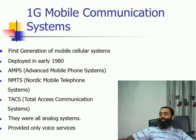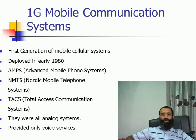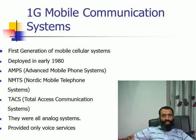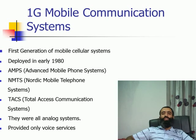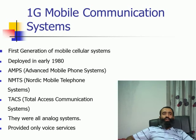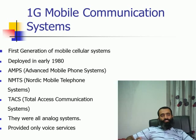The second system was NMT, the Nordic Mobile Telephony System, which was actually developed in the Scandinavian countries and primarily deployed there. Then you had the TACS system — Total Access Communication System — which was actually developed in the UK and deployed in Europe. So these 1G mobile communication systems were actually analog systems, meaning they used FDMA along with frequency modulation.